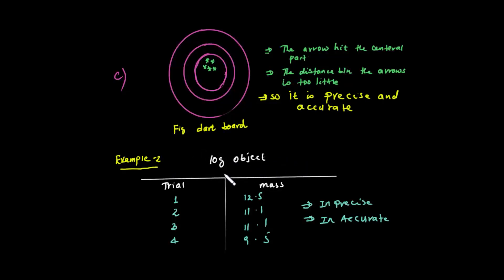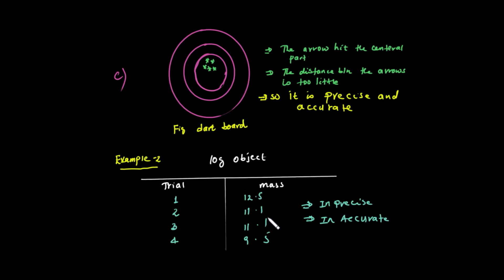Here are examples using measurement tools. There is an object of 10 grams. We take multiple measurements of this object. There should not be many differences between the values — if the values are close to each other, that is the truth of what precision and accuracy mean in practice.